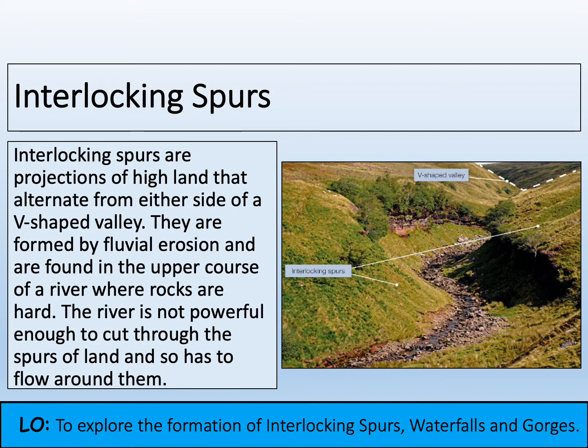So interlocking spurs — we know that V-shaped valleys are formed when weathering on the sides of the channel causes material to fall down into the main river channel and then be removed. What happens is we get hard points, areas of land that are more resistant, and they make the channel zigzag as it comes down. These are our interlocking spurs in our V-shaped valleys. The river is not powerful enough to cut through the rock obstruction, so it gets moved to one side and we get this zigzag form.